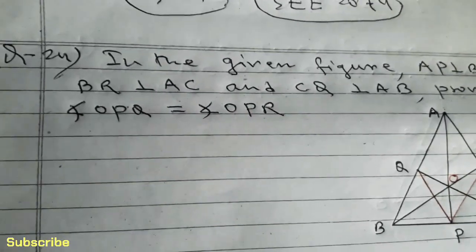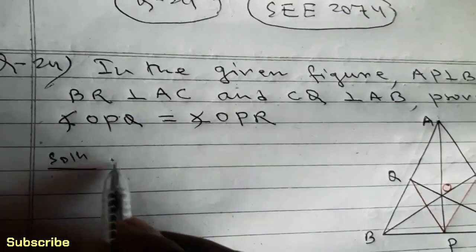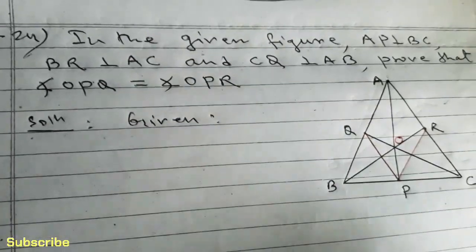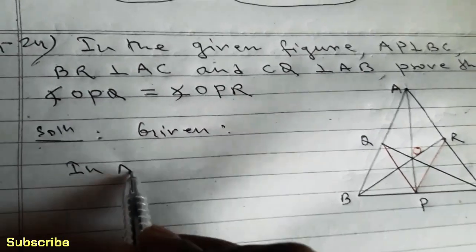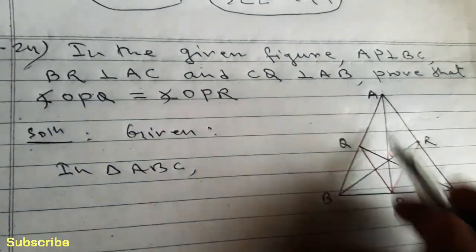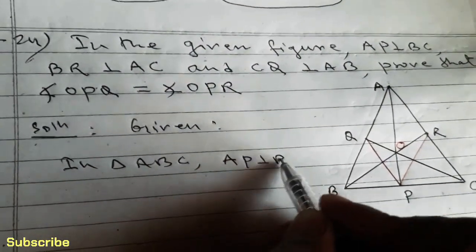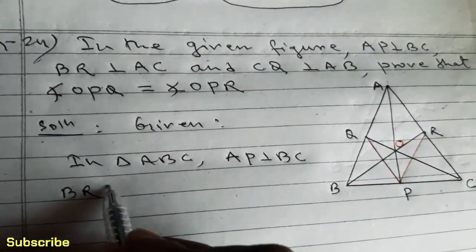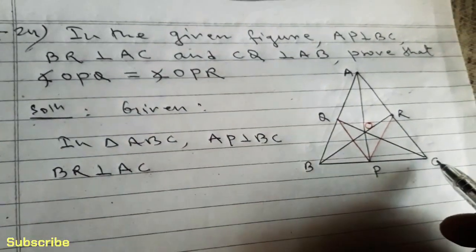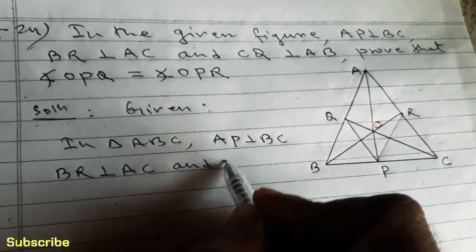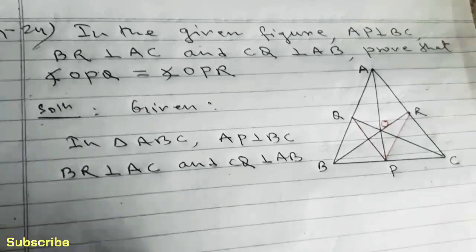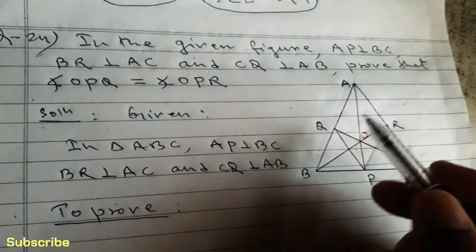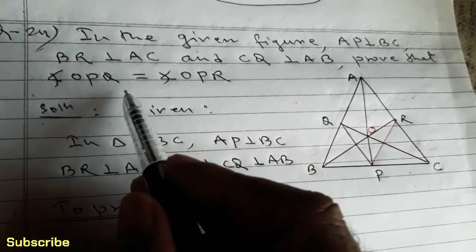Let's write the solution. First, given: in triangle ABC, AP is perpendicular to BC, BR is perpendicular to AC, and CQ is perpendicular to AB. Now let's write what we have to prove: angle OPQ is equal to angle OPR.